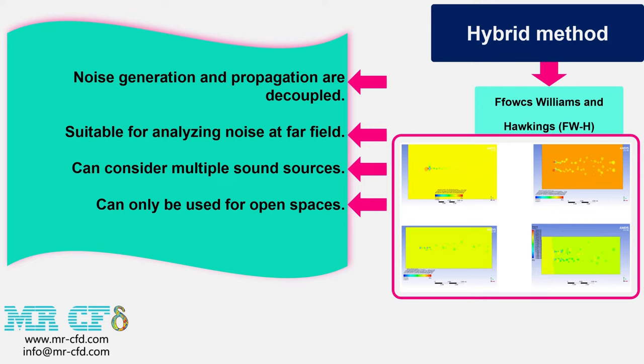The second approach is the hybrid method, the first type of which is the Williams and Hawking's method. In this method, noise generation and propagation are considered separately and are decoupled. Unlike the direct method, this method is suitable for predicting acoustics at a distance from the sound source. It is also possible to consider several sound sources and several receivers simultaneously.